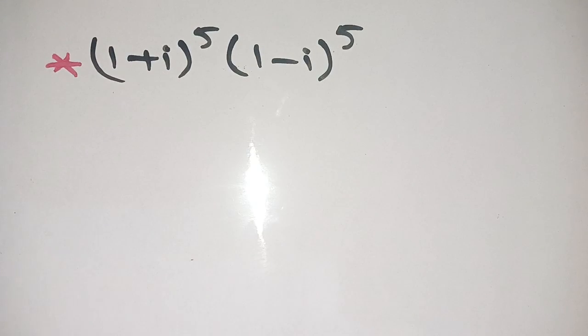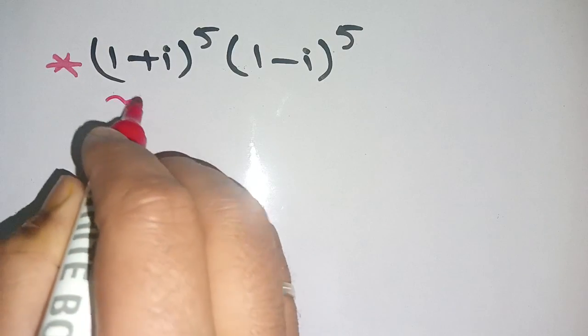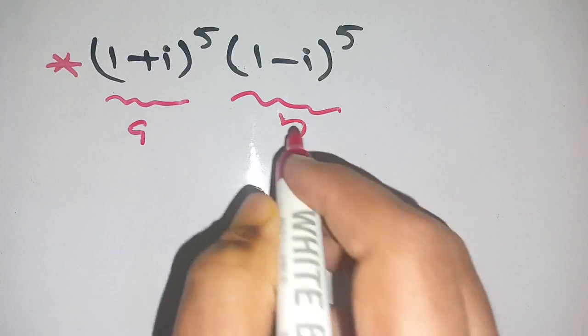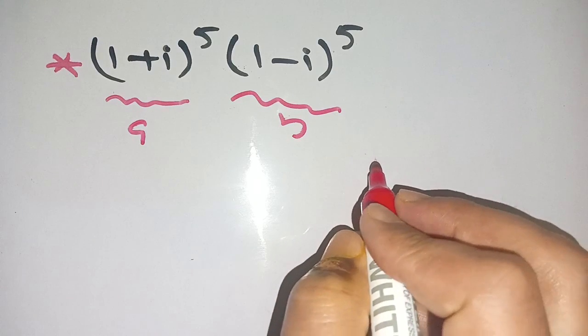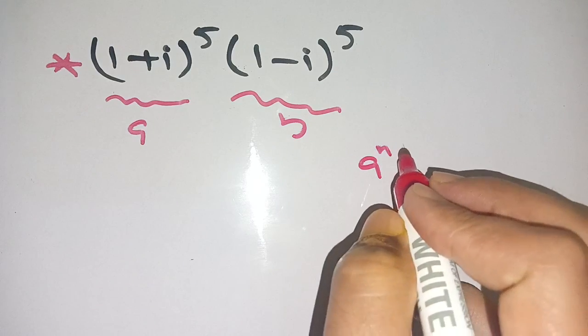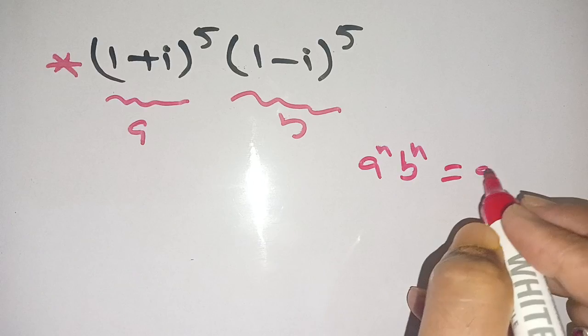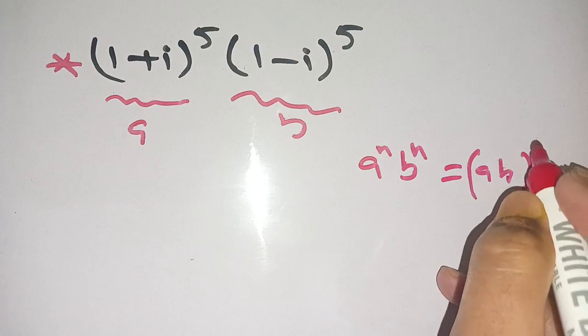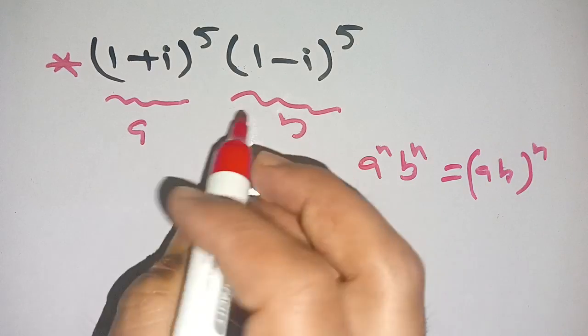Let us consider that this term is a and this term is b. If we know that a^n times b^n is equal to (ab)^n, on applying this identity here...